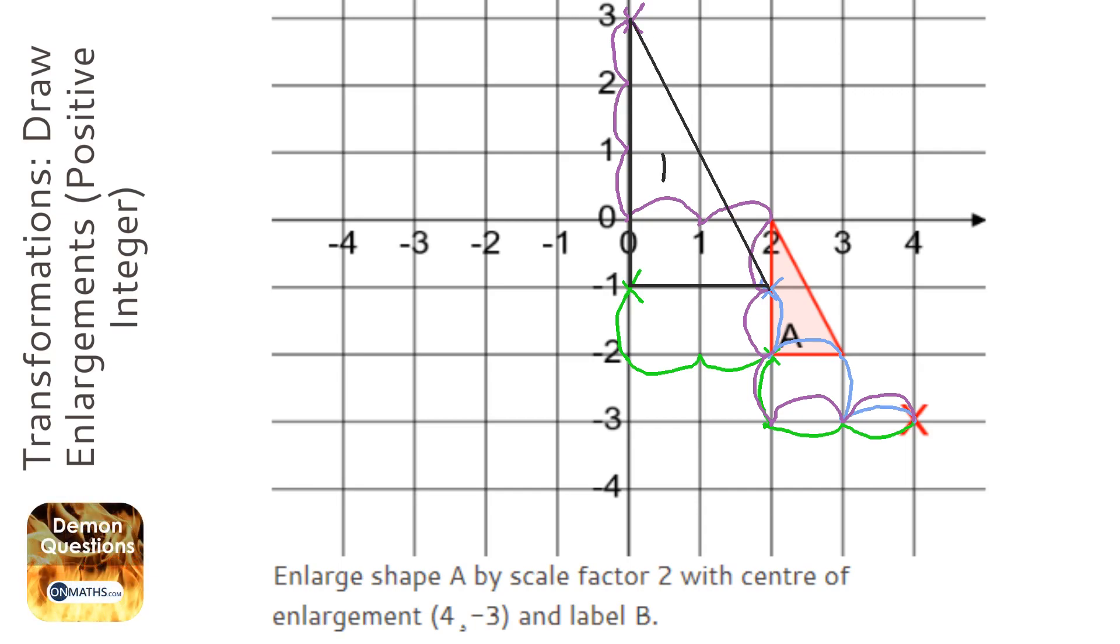Now I always find this much easier to do by looking at how far left, how far up do I have to go. Now if the scale factor is 3, I would do it once, do it again to get scale factor 2, and then do it a third time. So for this green one, I would go another 2 to the right and another 1 up if it was scale factor 3, which it's not in this question, so I'll get rid of that.